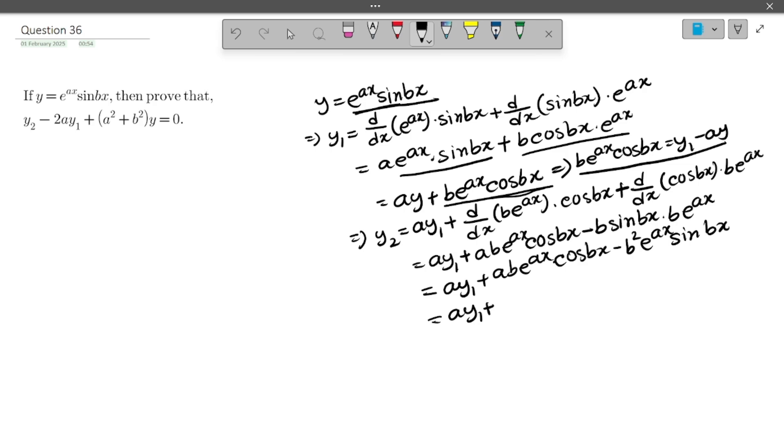So it will be ay₁ plus, in the place of this we will use this. So it will be a into (y₁ minus ay) minus b² into, here it is, it will be e to the power ax into sin bx which is y. So you will use y here.